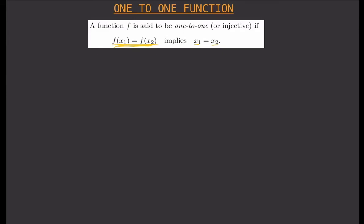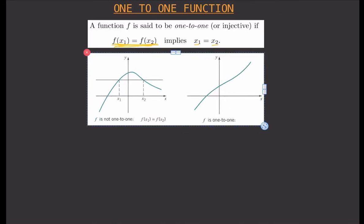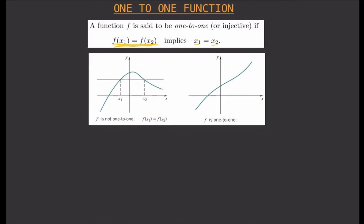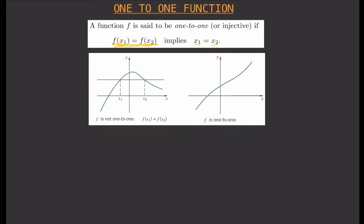How can we see that graphically? So here is a graph. The graph on the left is not a 1-to-1 function. Why is this not 1-to-1? Because for one value of y, you have two values for x — this x and that x. So for one value of y, you have two values for x, and that is not 1-to-1.